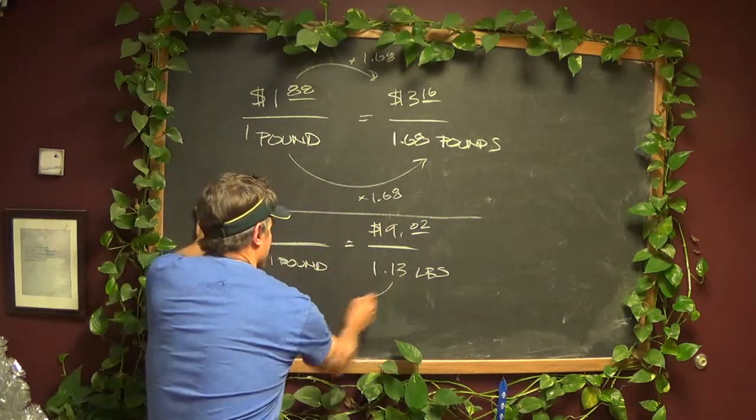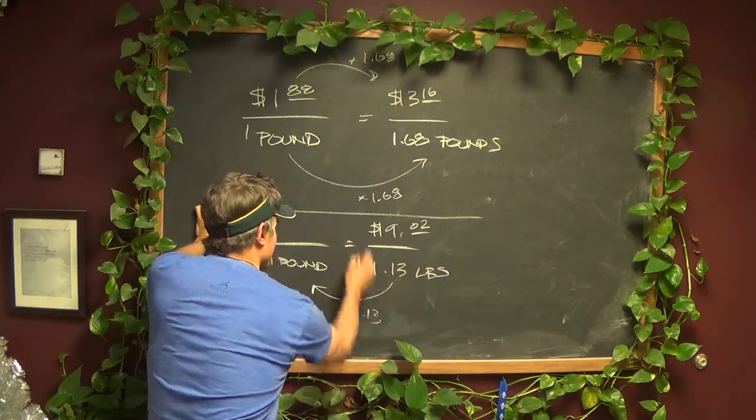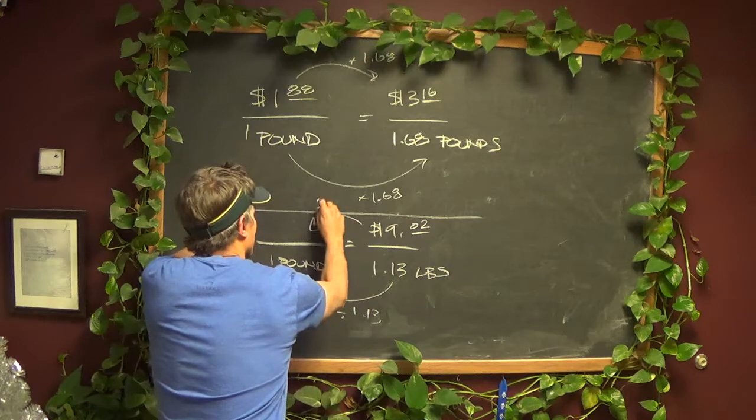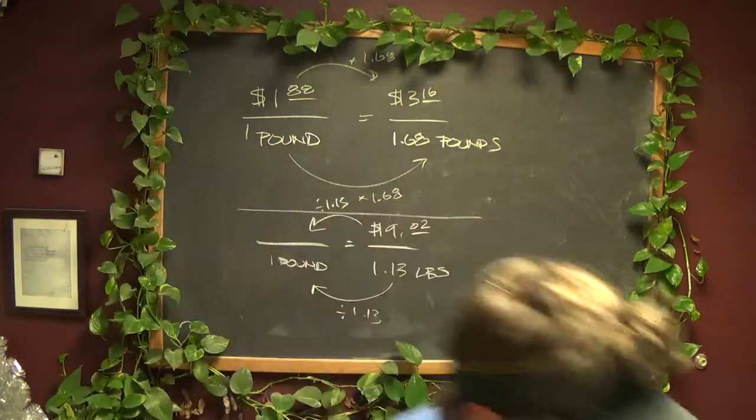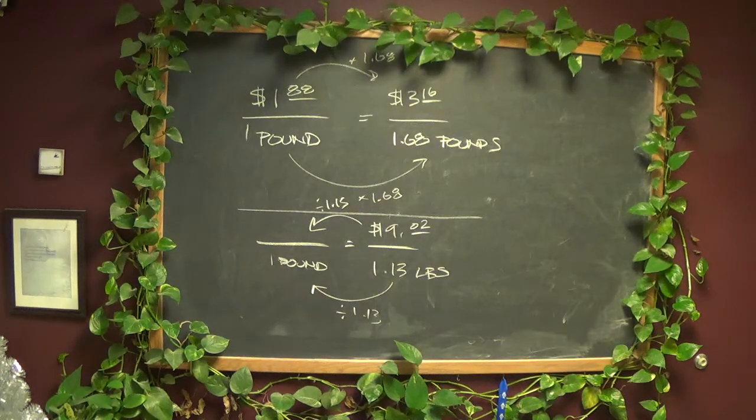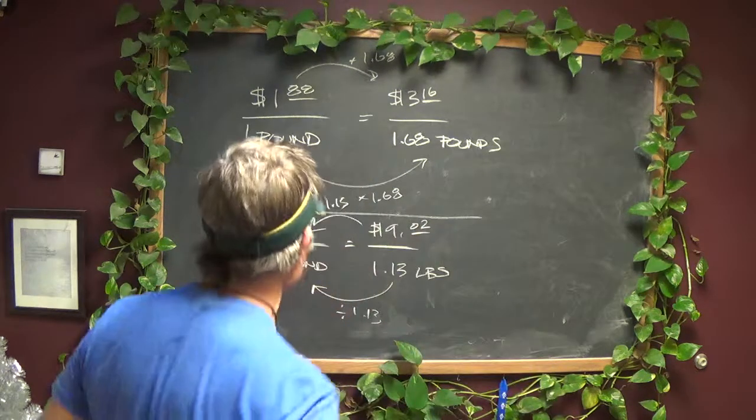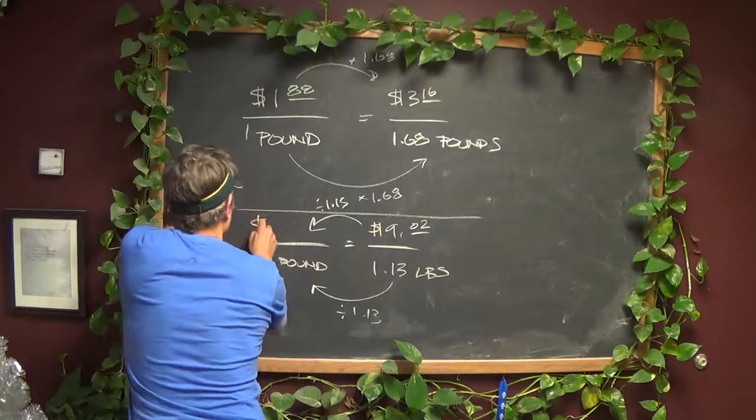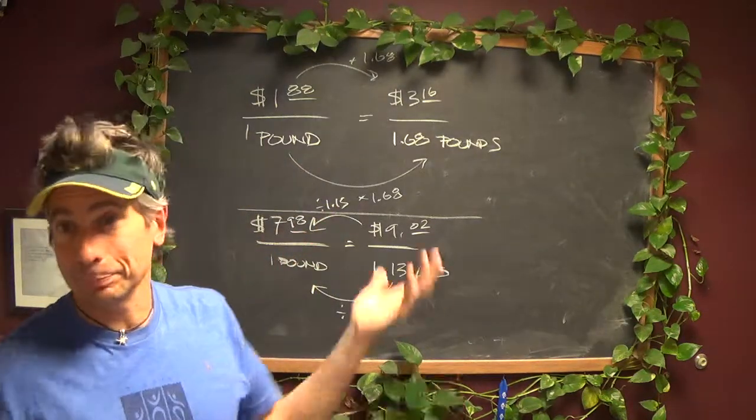So to get from here to here, we're going to divide by 1.13. So to get from here to here, we're also going to have to divide by 1.13. So we're going to take $9.02 divided by 1.13, and I get $7.98 a pound.